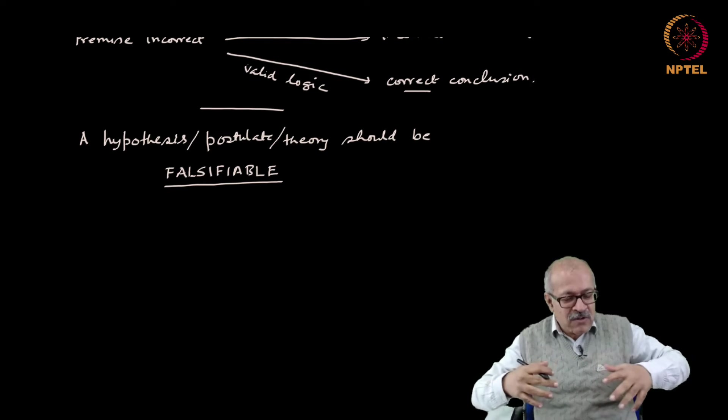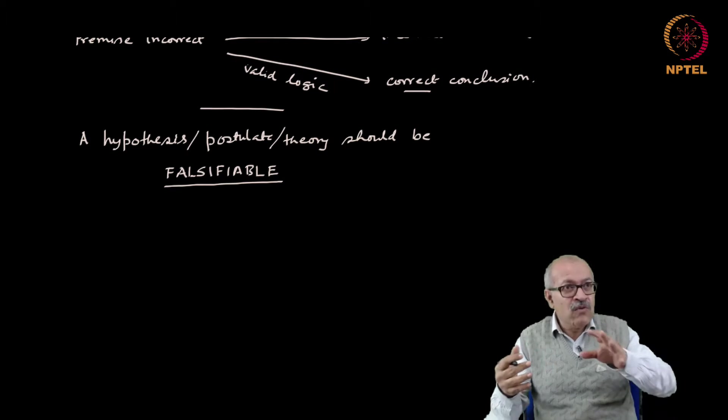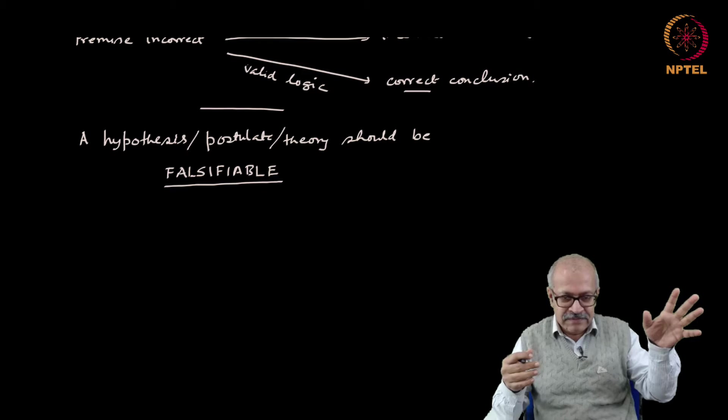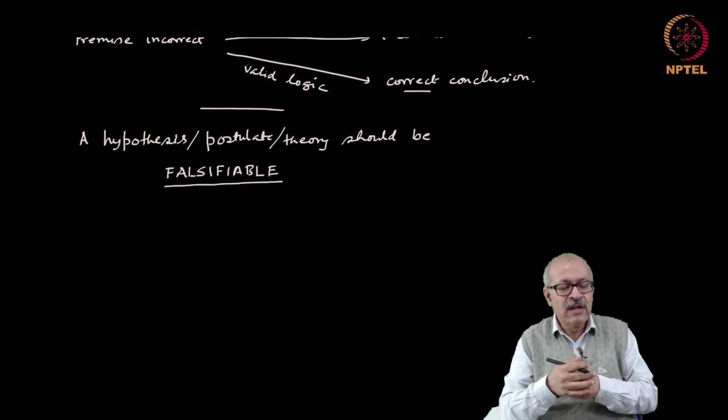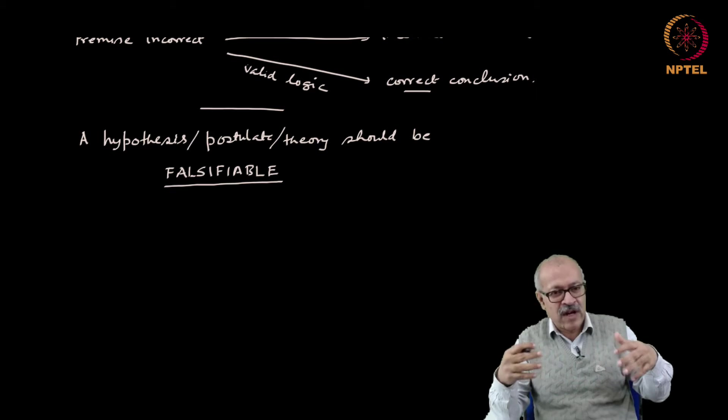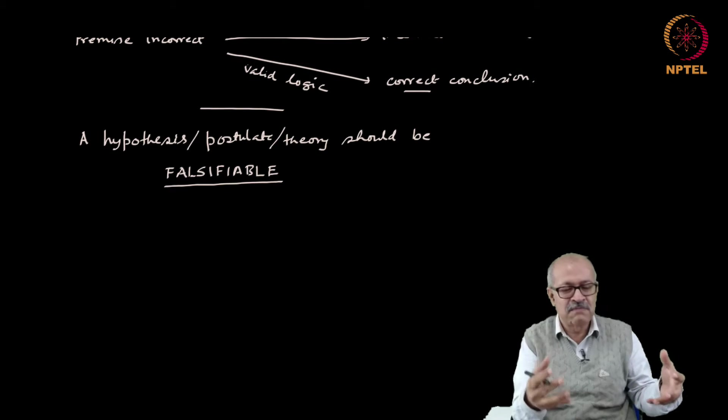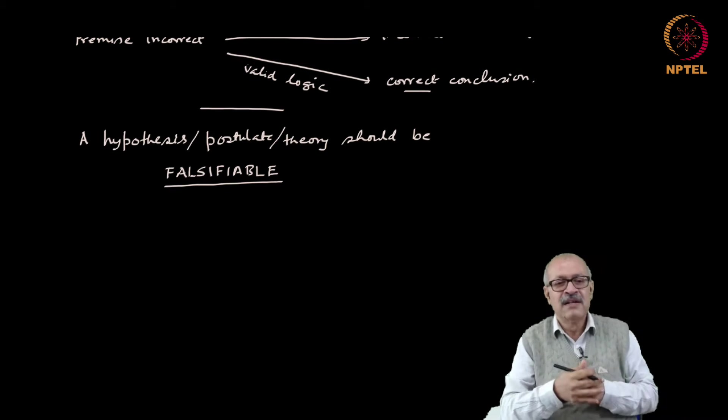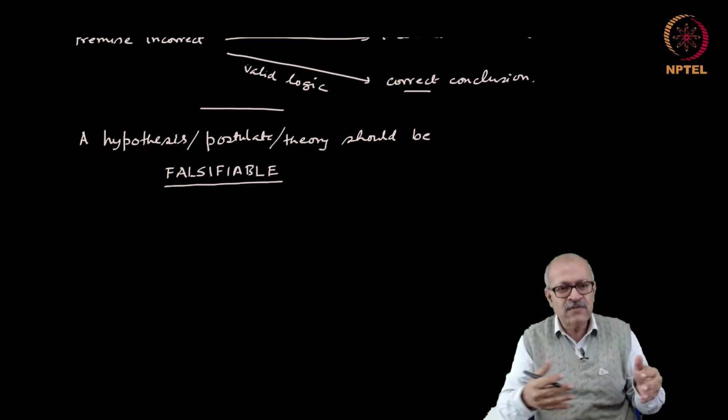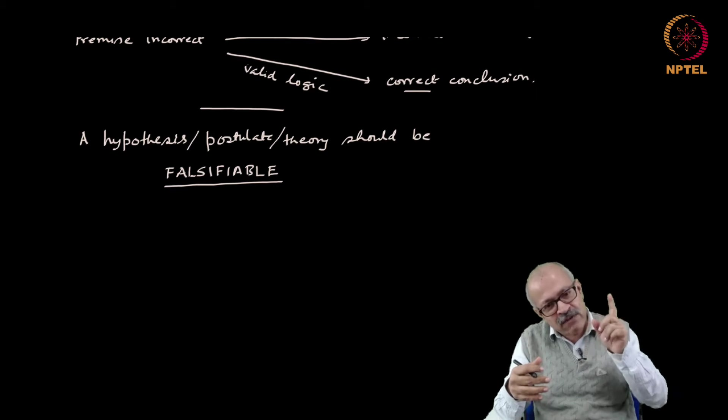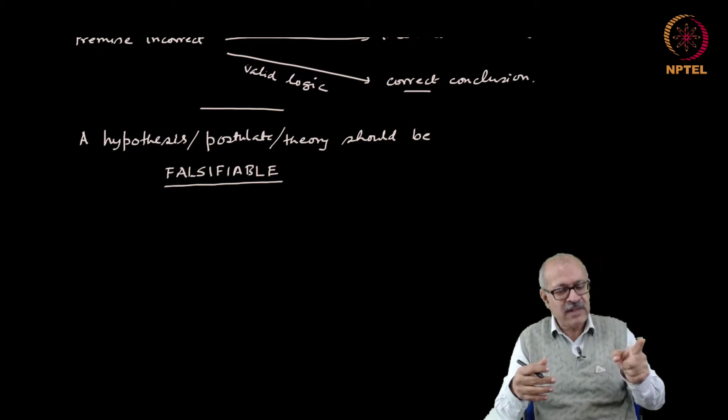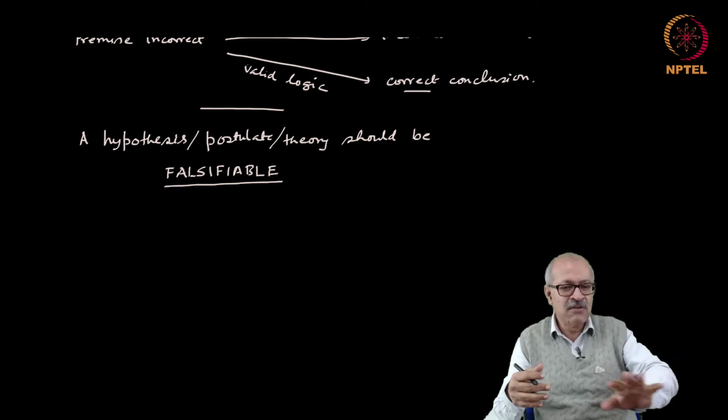The way to test the theory would be to look for objects that are very old, and there are stars that are very old, there are star clusters that are very old. One can try to figure out by calculating how much time it takes to burn up the hydrogen that is present inside that star, and so on and so forth. There are ways of calculating the age of stars. If you can ever find one star that is older than 15 billion years, the theory is definitely false.